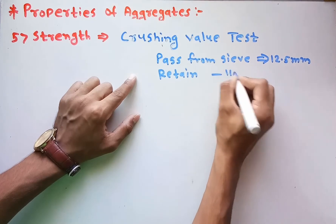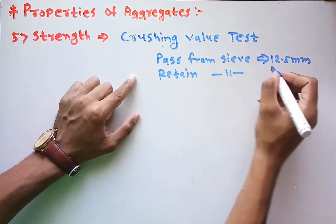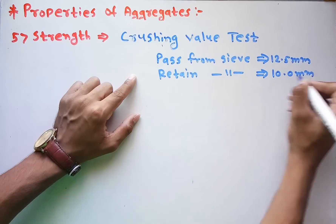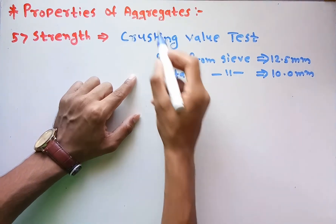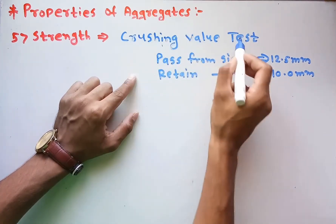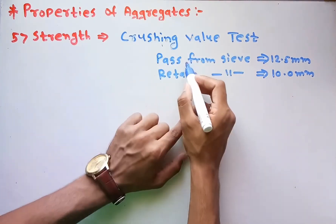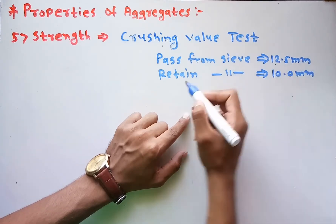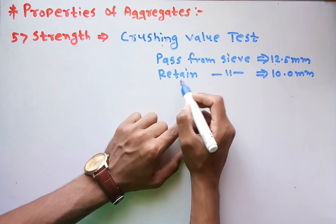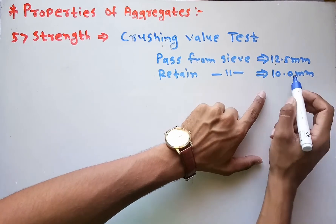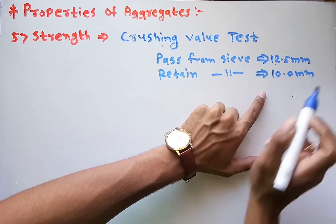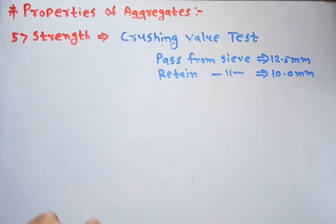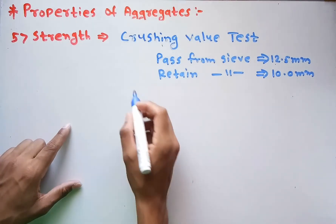Whatever aggregates are used in the crushing value test, they are passed from the 12.5 mm sieve and retained on the 10 mm sieve.